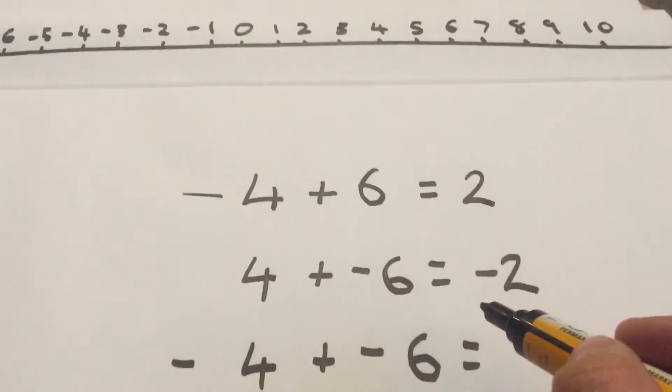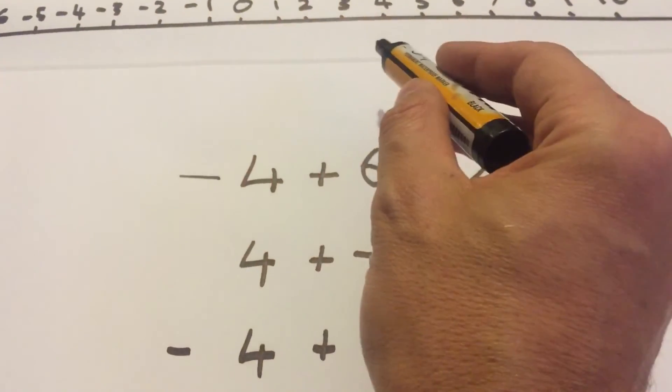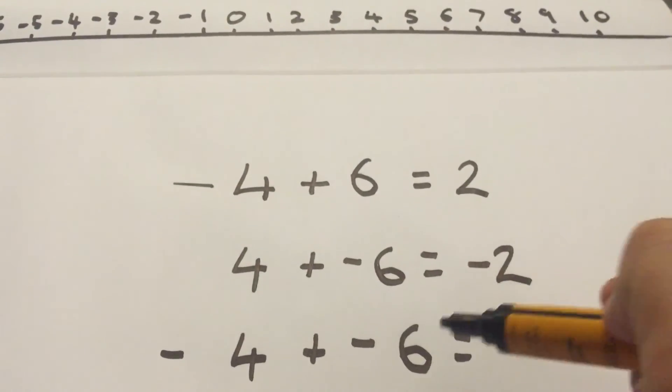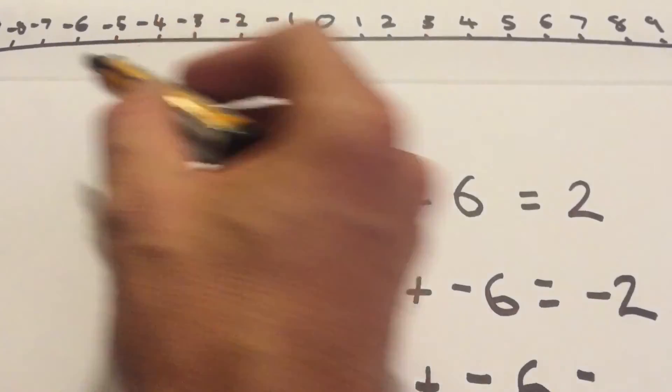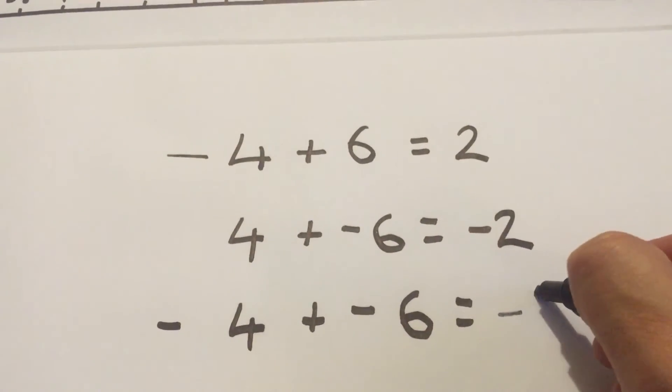Okay, if we go back up to here, think about the first one we did, we added on normal 6 and we went this way and we got to positive 2. But we can't do that again because it's negative 6. So you've got to start from negative 4 and go this way down the number line. So if you did that, the answer is negative 10.